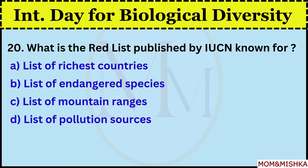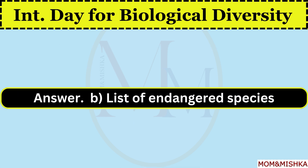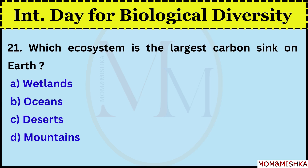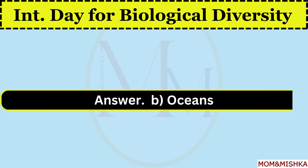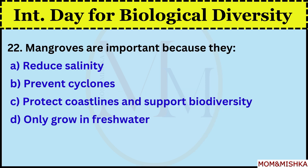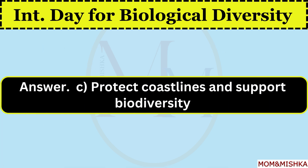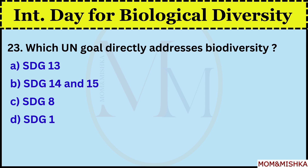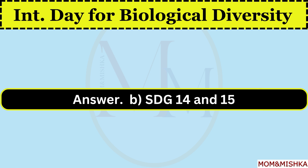What is the Red List published by IUCN known for? List of endangered species, option B. Which ecosystem is the largest carbon sink on Earth? Oceans, option B. Mangroves are important because they protect coastlines and support biodiversity, option C. Which UN goal directly addresses biodiversity? SDG 14 and 15, option B.